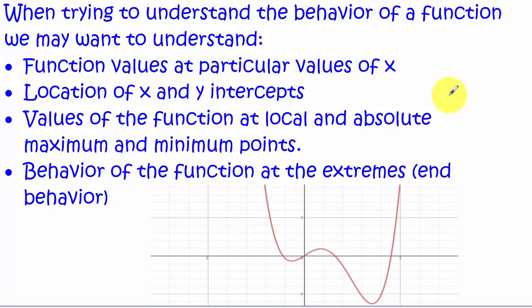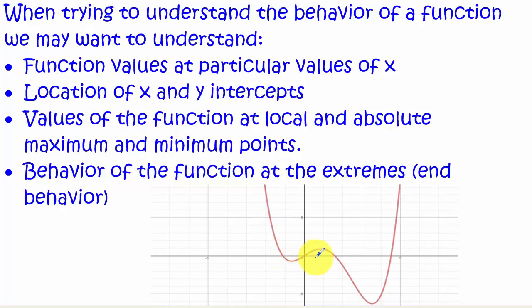Sometimes we are interested in specific points where the graph crosses the x and y axis. I've shown a typical graph here — x-intercepts are where it crosses the x-axis, and the y-intercept is where it crosses the y-axis.